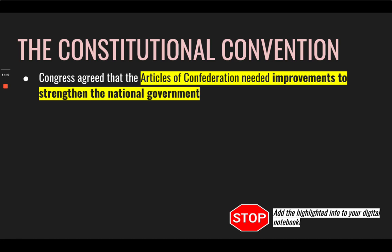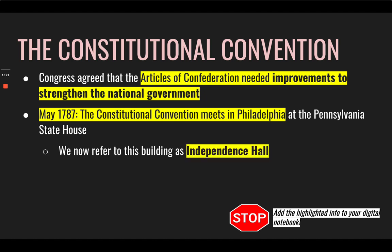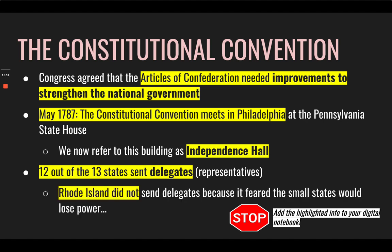Congress agreed that the Articles of Confederation needed improvements to strengthen the national government. In May of 1787, the Constitutional Convention met in Philadelphia at the Pennsylvania State House. We now refer to this building as Independence Hall. Twelve out of the thirteen states sent delegates or representatives. Rhode Island did not send delegates because it feared the small states would lose power.